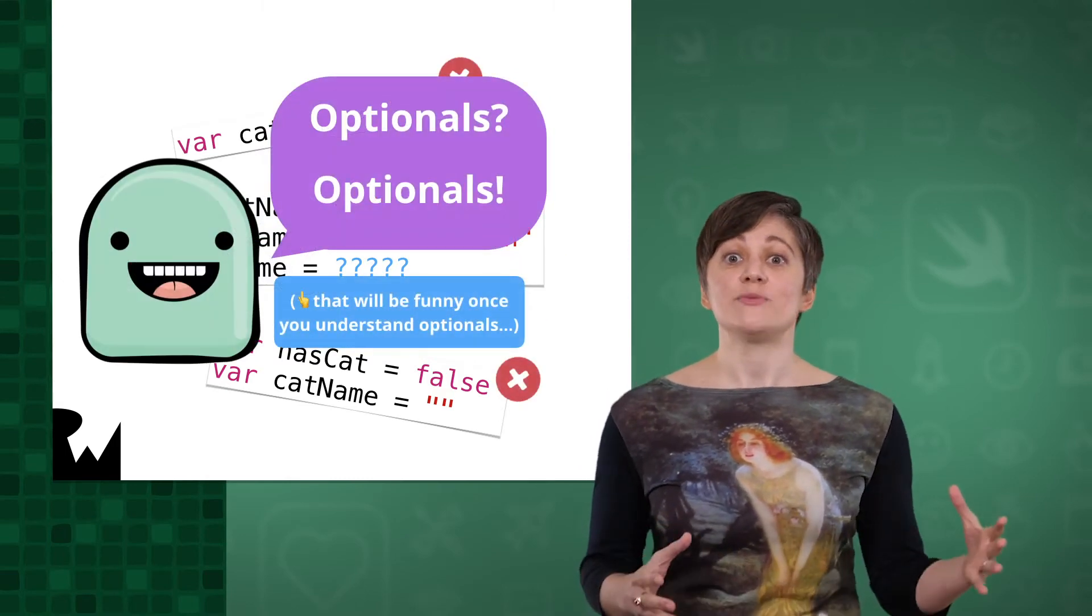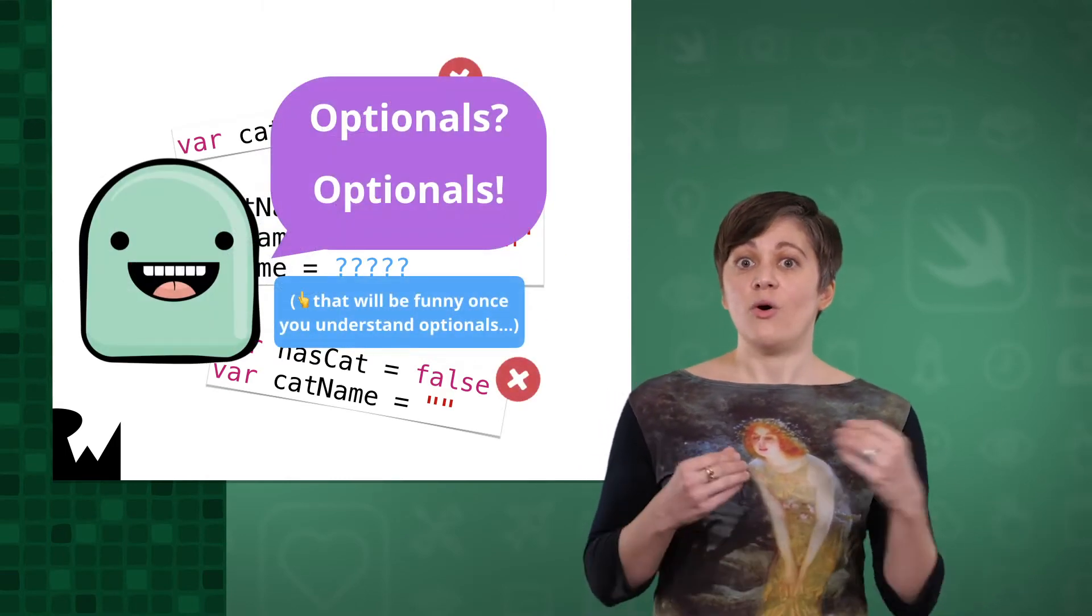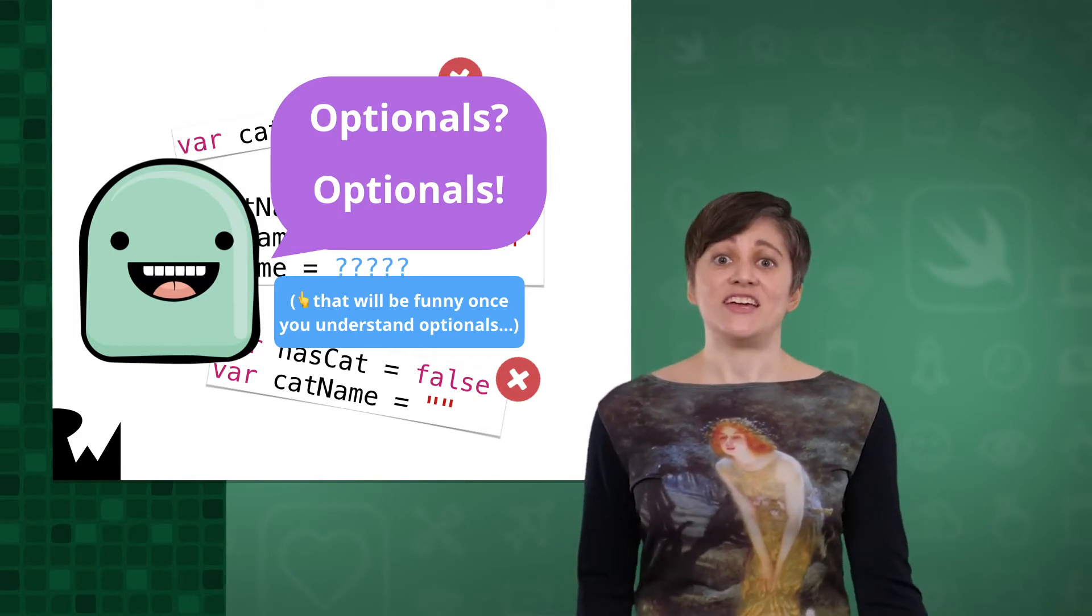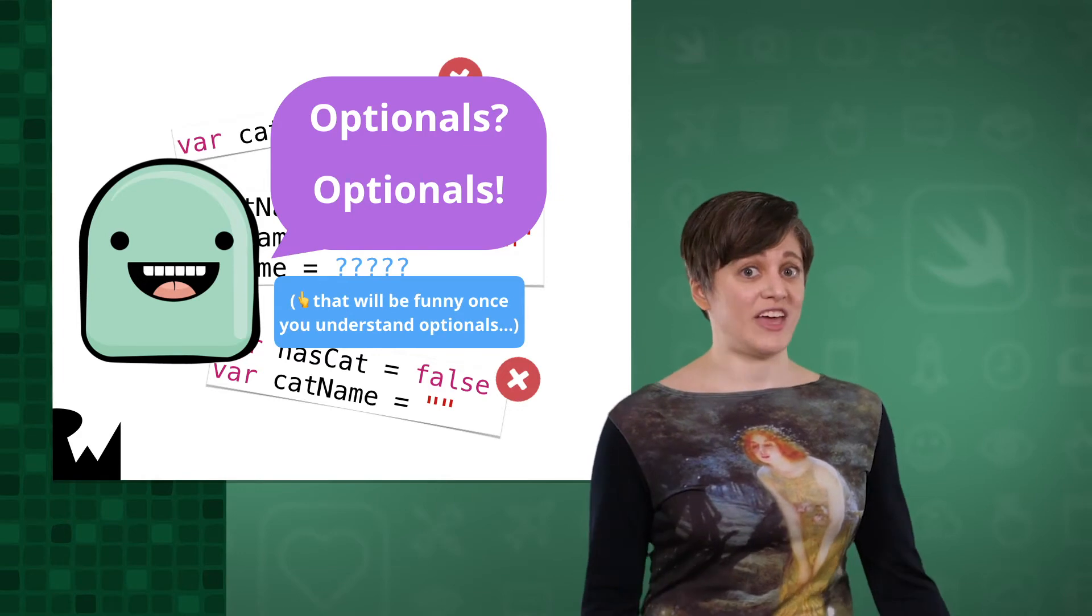Optionals in Swift let us easily represent either a value or the absence of a value, which is called nil. I think of Optionals as a kid-friendly version of Schrodinger's cat. If you're not familiar with the concept, there's a box that might have a cat inside, or it might have no cat. The trick is you won't know if there's a cat until you open the box.